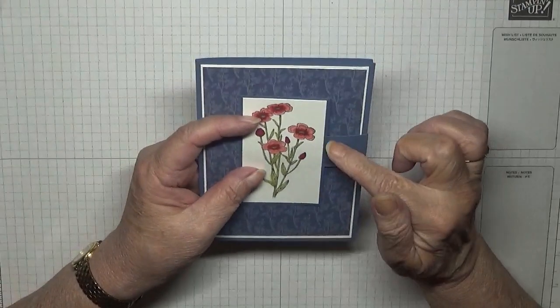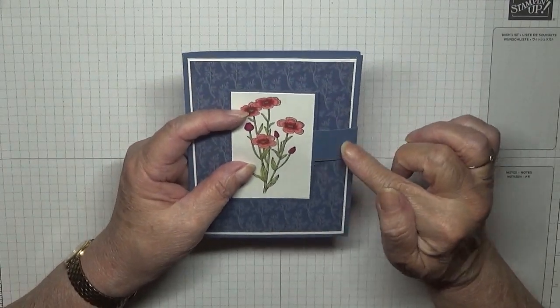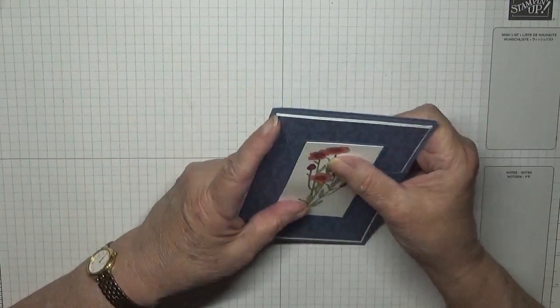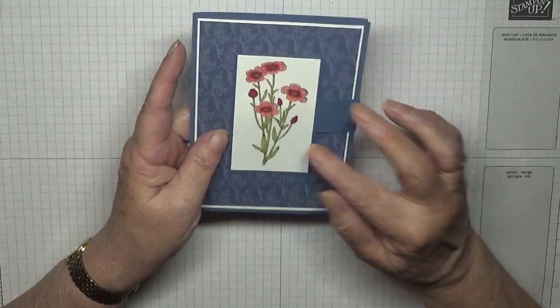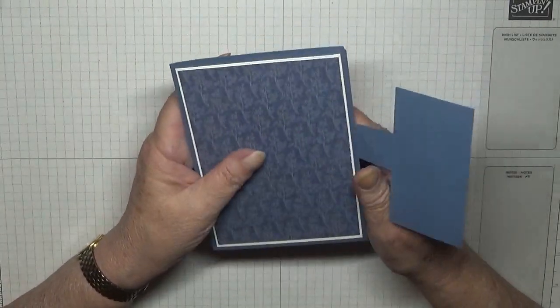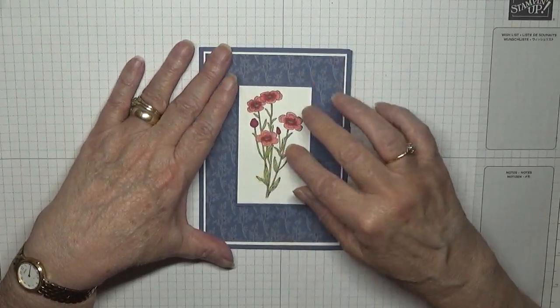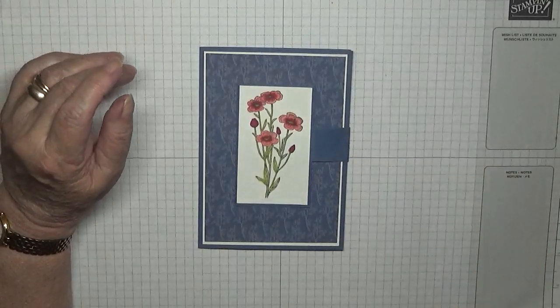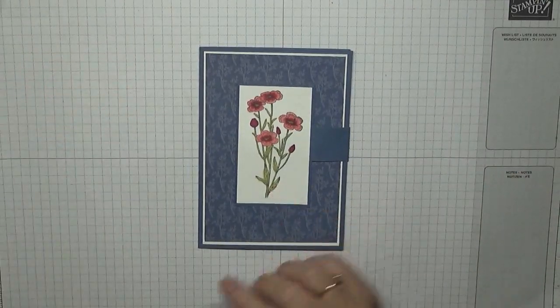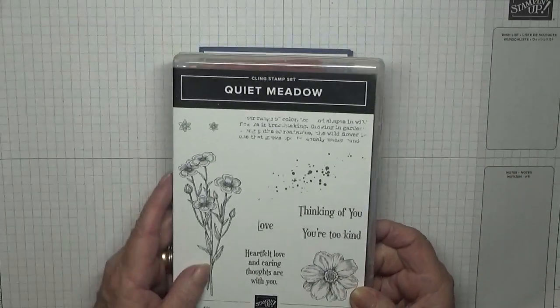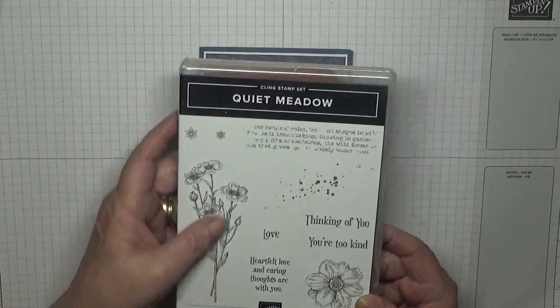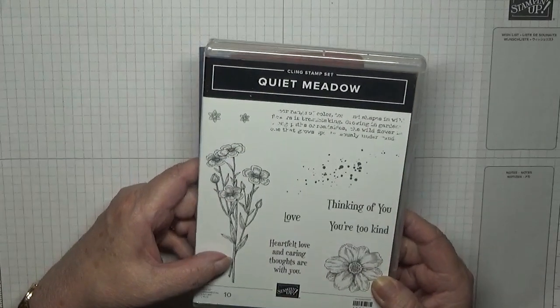There's no sentiment on it and I should have added a bit of paper there but I forgot. I still don't know what sentiment to put on it, but I can add one if I want to use the card. So to make this card I used Quiet Meadow and I use this flower image here.